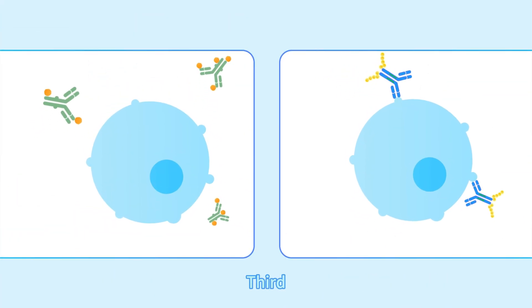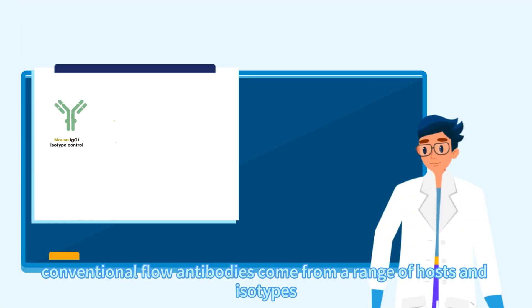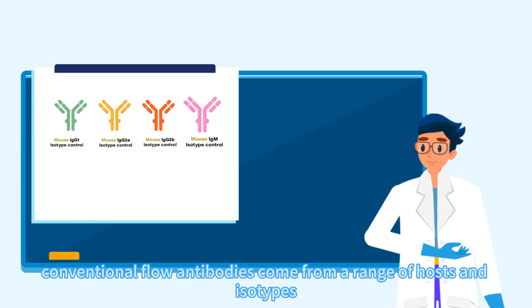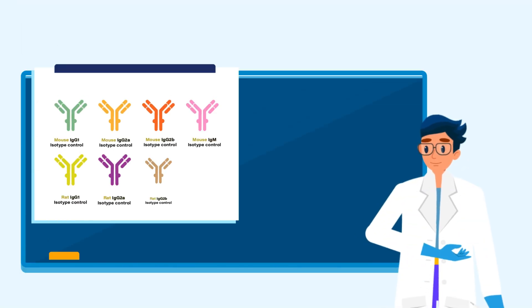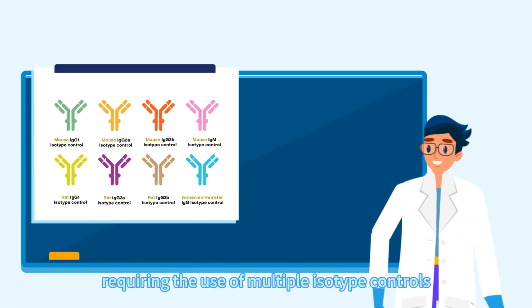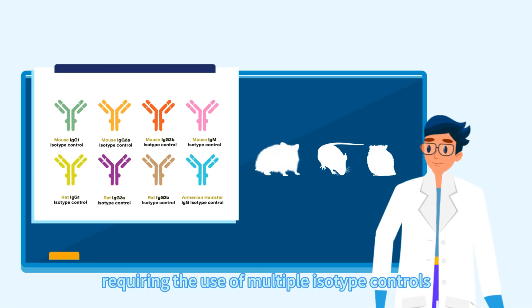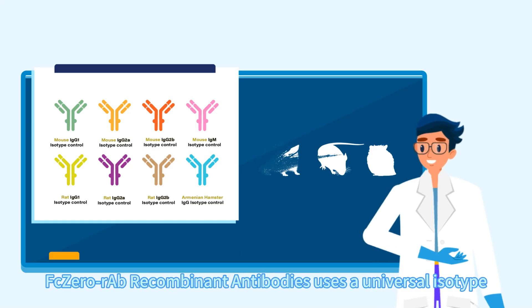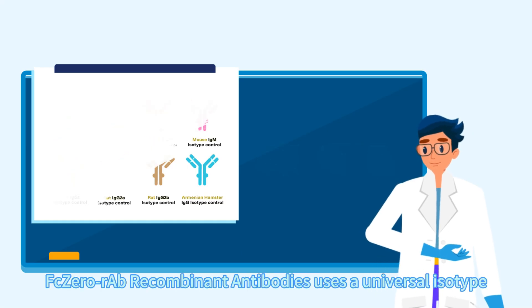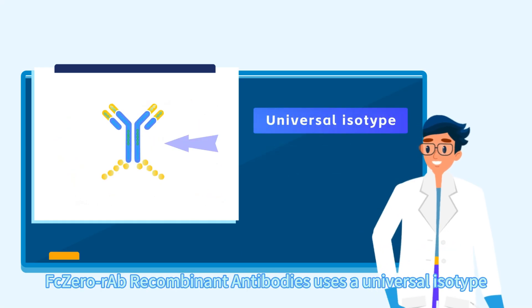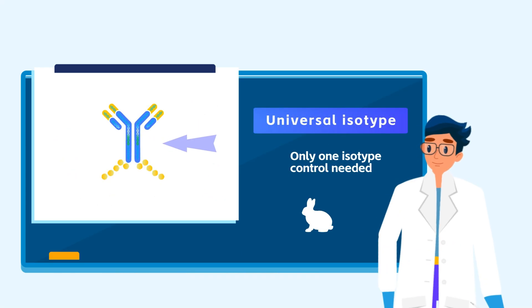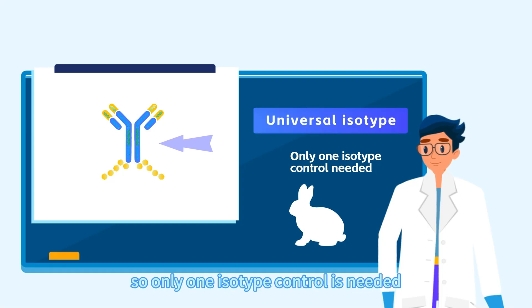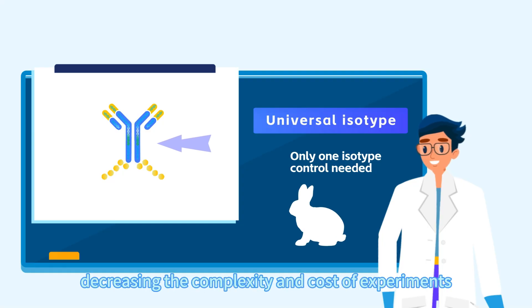Third, conventional flow antibodies come from a range of hosts and isotypes, requiring the use of multiple isotype controls. FCo-RAB recombinant antibodies use a universal isotype, so only one isotype control is needed, decreasing the complexity and cost of experiments.